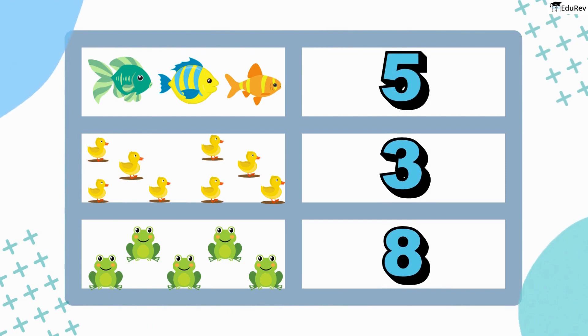Let us now count and match. All you have to do is count and match it with the number. So, let's count the fishes here. Here are 1, 2 and 3. 3 fishes. So, we will draw a line at 3. Next,